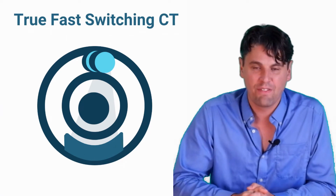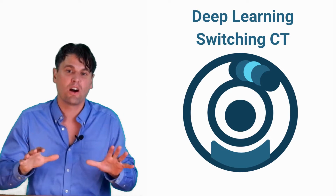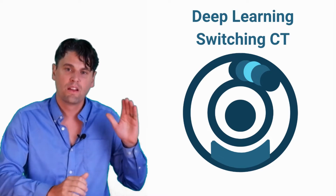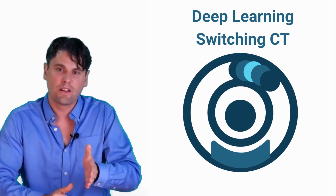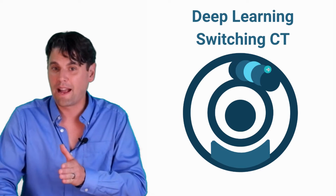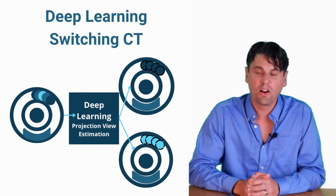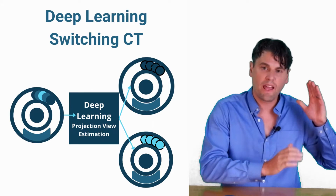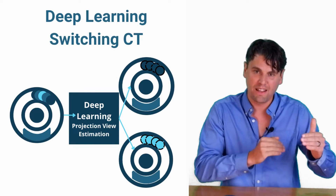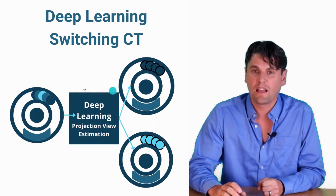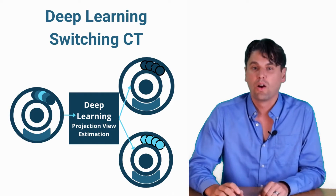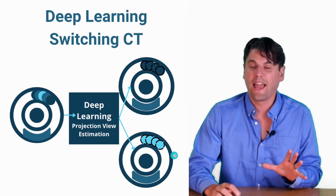That is what we call true fast KVP switching. Recently, the concept has been productized to do what we call deep learning switching. In this scenario, the tube hardware can't switch fast enough to go every other view, but you can still modulate the KVP more slowly — changing from a high KVP to a low KVP over several views. You then use a deep learning algorithm to estimate in the projection space what it would look like if you had true alternating low KVP and high KVP projections.